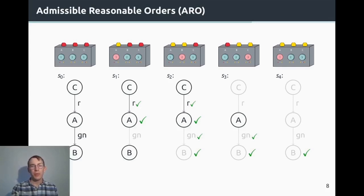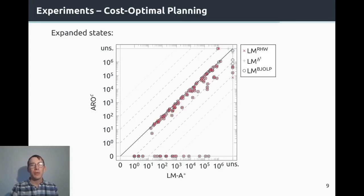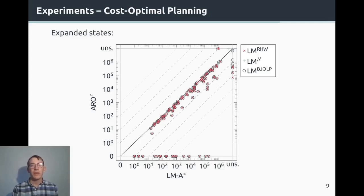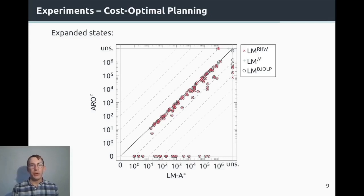With this progression, where landmarks are always admissible, we can use it in a cost-optimal setting. We experimented by substituting RO in place of the LMA* progression. The amount of expanded states with this strategy is lower, which is a good thing. We can also see that in some cases this even leads to perfect information in the landmark graph, meaning the heuristic is perfect in those cases.